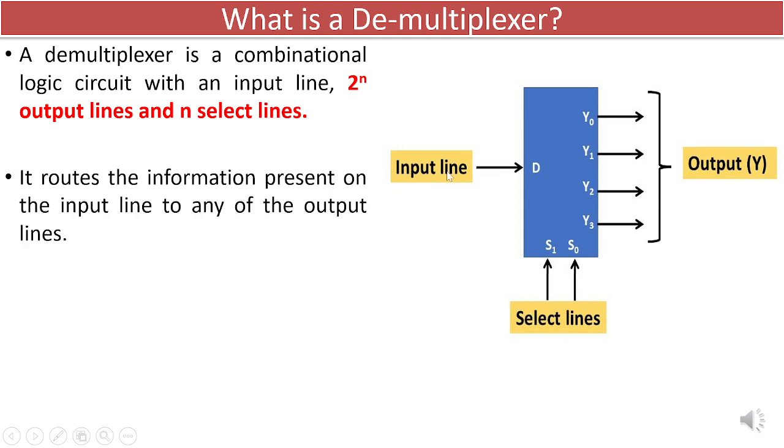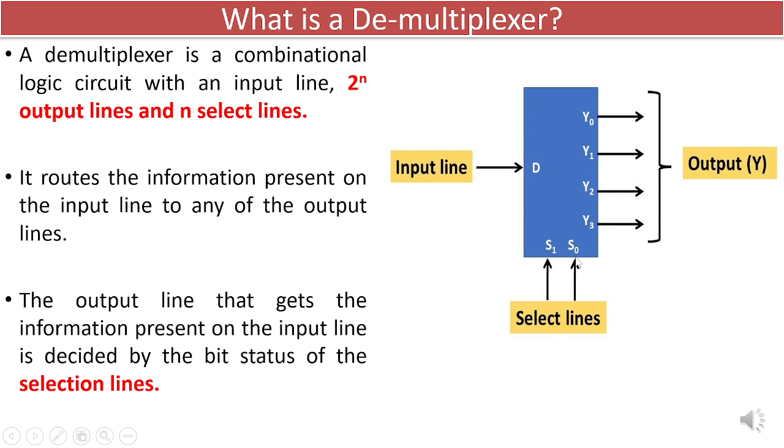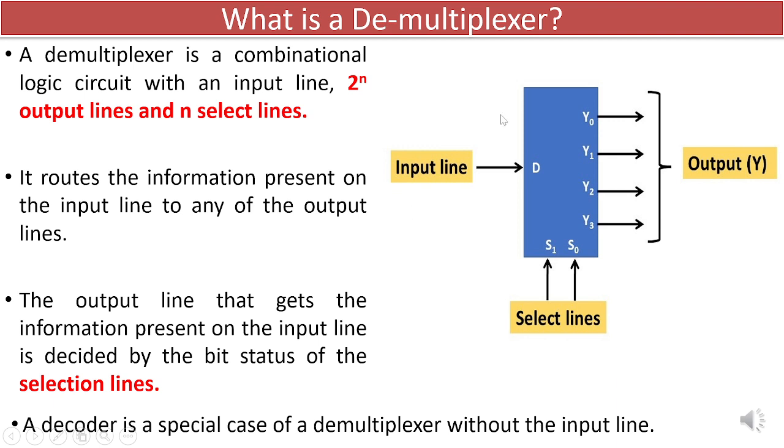Its function is to direct the data on the input line to one of the output lines. The specific output line receiving the data is determined by the binary status of the selection lines. It's worth noting that a decoder is essentially a specialized form of a D-multiplexer, omitting the input line altogether.